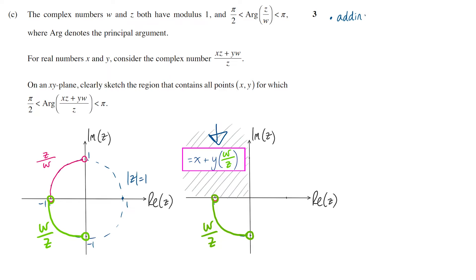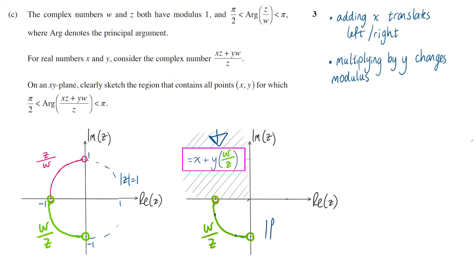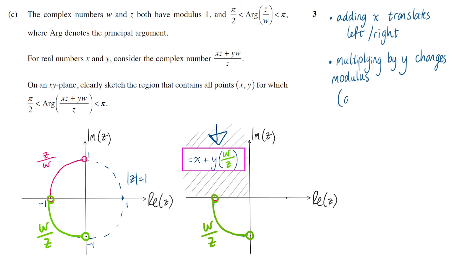To understand the effects, it helps to think about the addition first. Adding a real number to a complex number can only move it left or right — adding a positive real number translates it right, a negative real number translates it left. What about multiplication by a real number? If that number is positive, it just changes the modulus. So if Y were 2, any point on the arc in quadrant 3 would double in modulus, but then by only adding X (moving left or right) you couldn't end up in the second quadrant. So Y must actually be negative, and with a negative Y, not only does the modulus change but the point is reflected through the origin, moving up to the first quadrant.